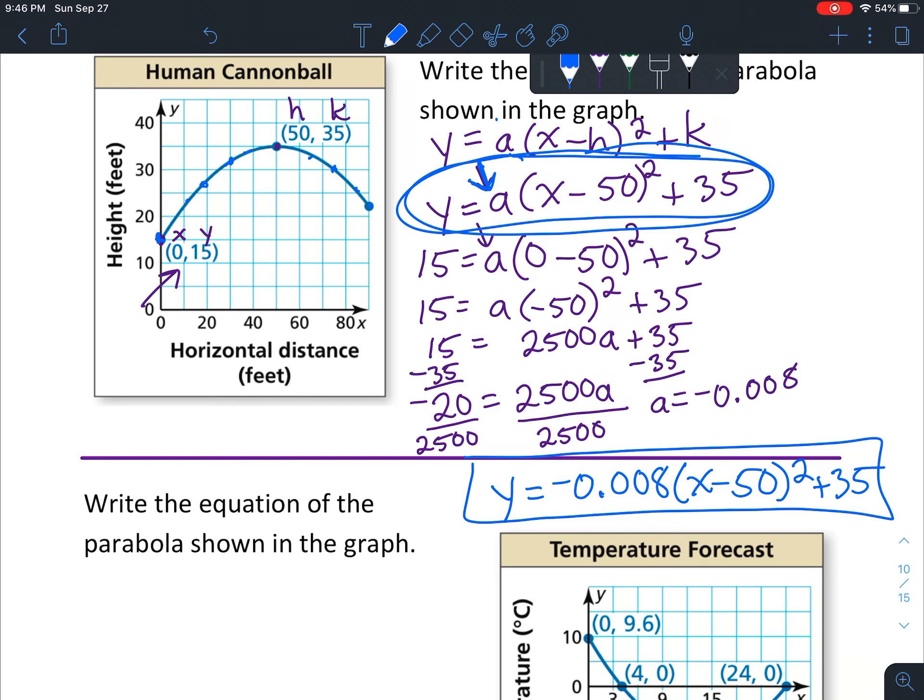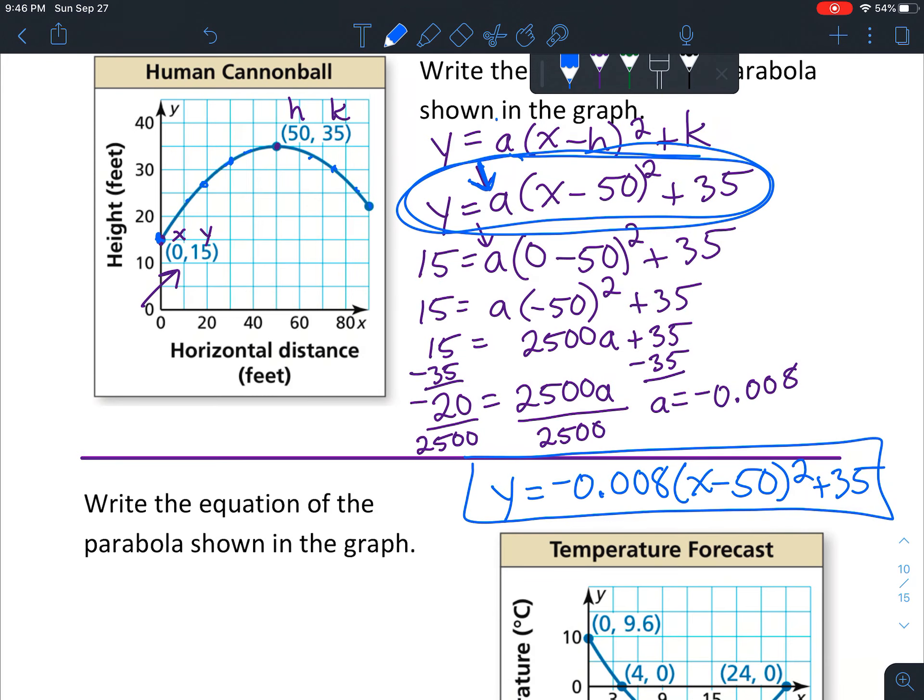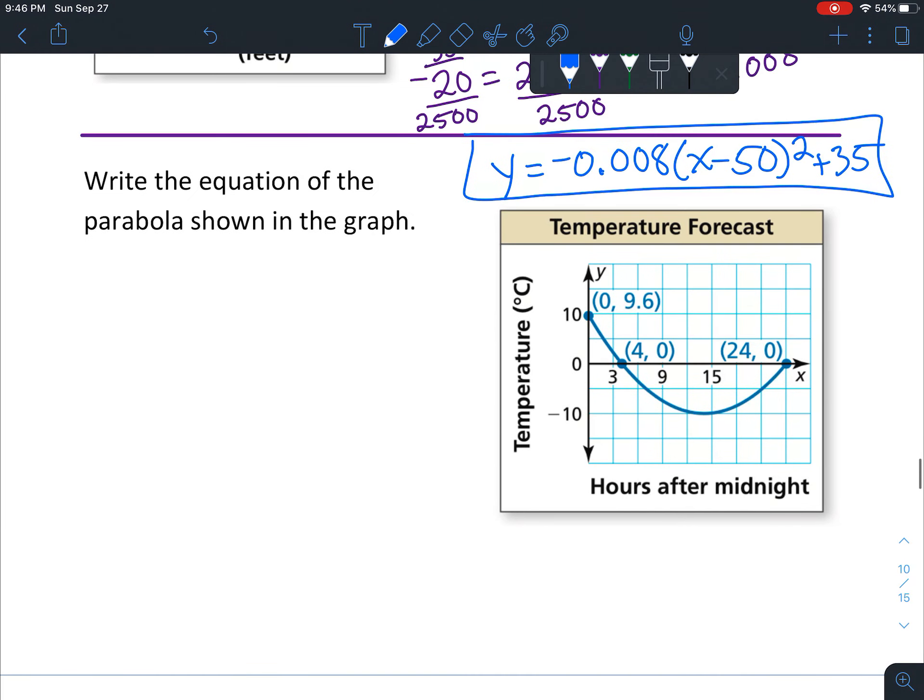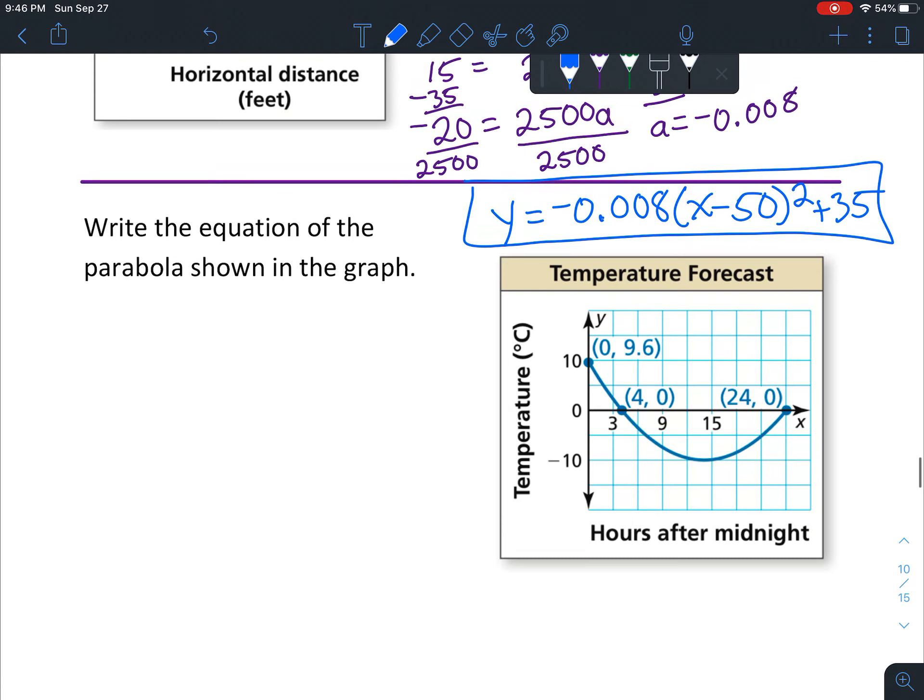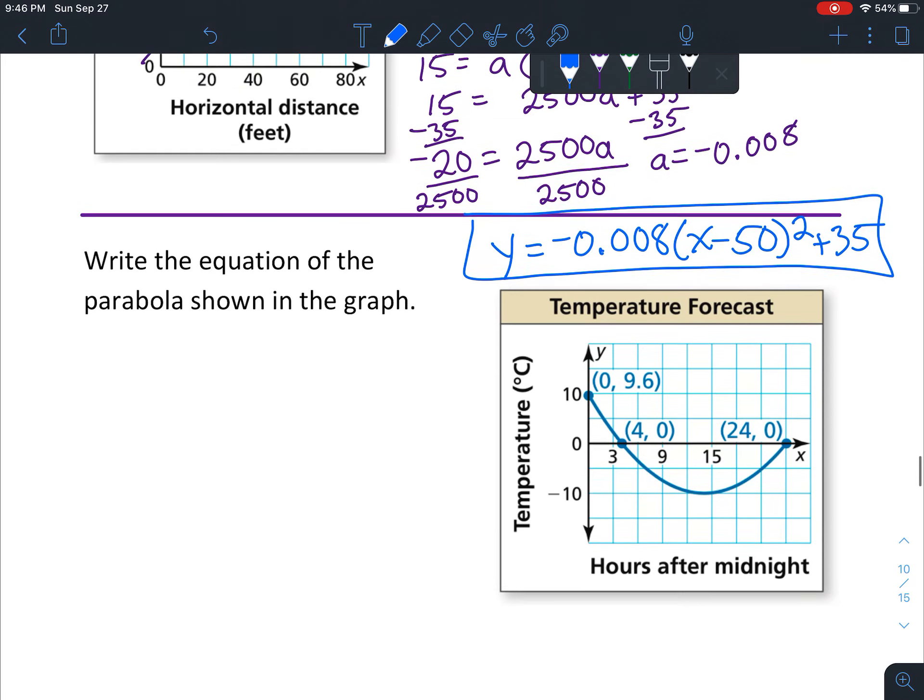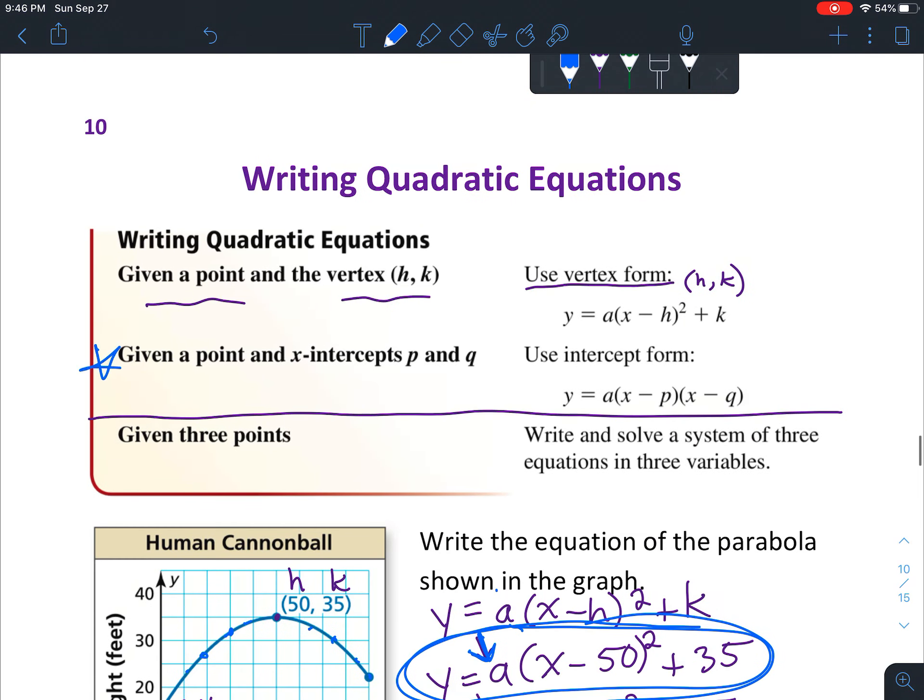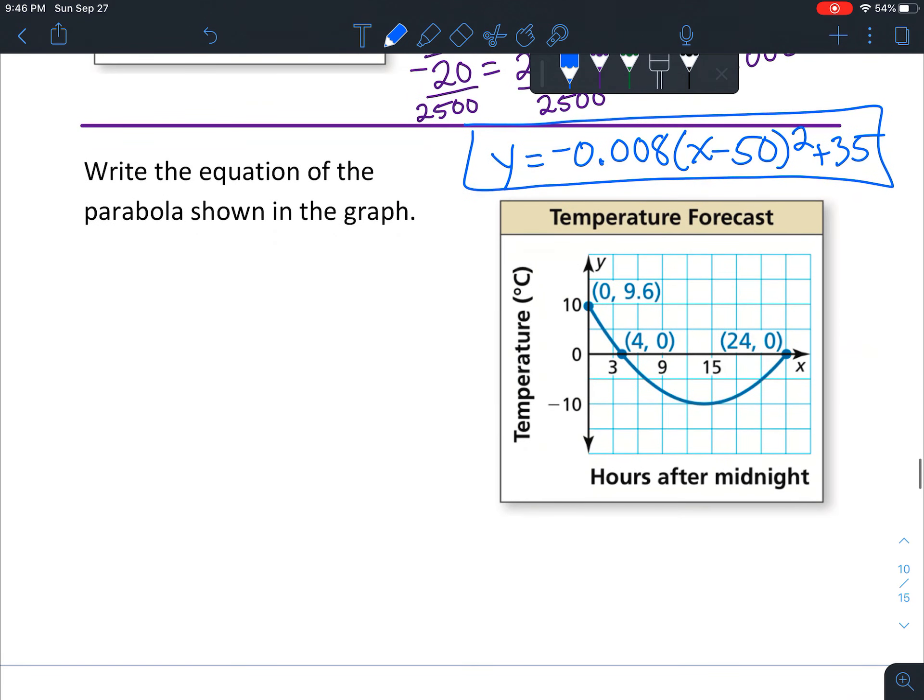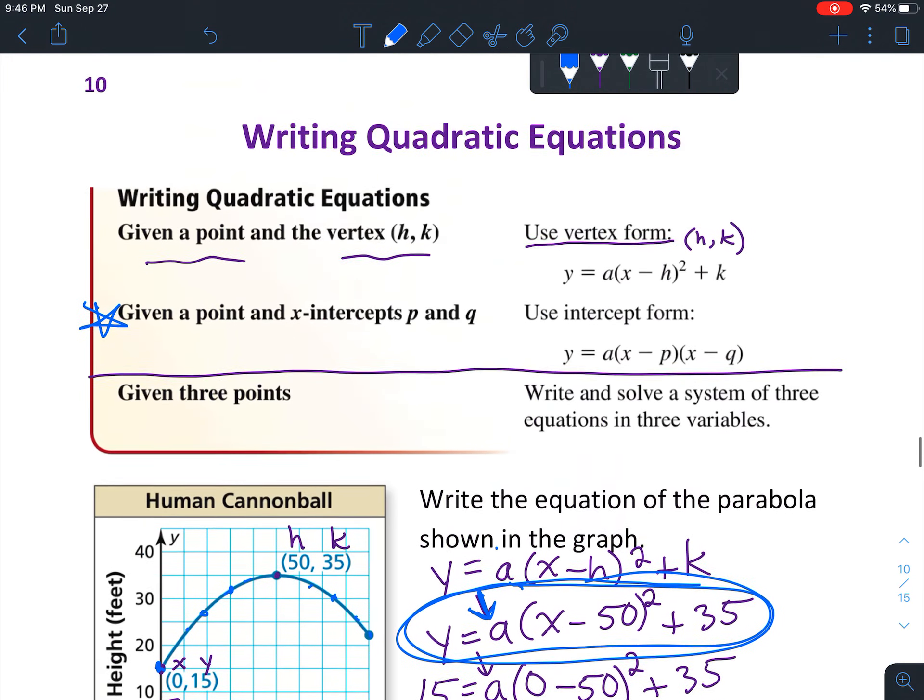Write the equation of the parabola shown in the graph. This time we're given different things - we're given x-intercepts and another random point. We're going to use the second example: given a point and the x-intercepts p and q.